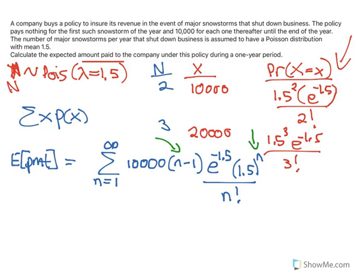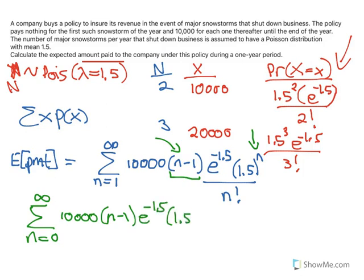Now we need to figure out how to calculate this. Well, what we should notice is that if we can get this sum to actually start at 0, then when we have N minus 1 multiplied in there, that's just the expected value of N minus 1, which would be really good, right? So if I can adjust this, in fact, I'm just going to kind of force it in. So I'm going to change the sum to go from 0 to infinity, in other words, all possible values for the number of snowstorms. 10,000, this will still be N minus 1, E to the negative 1.5, 1.5 to the N over N factorial.